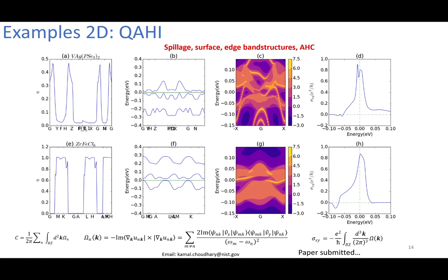We also found quantum anomalous Hall insulators. These are characterized by broken time reversal symmetry and which have gapped surface states, but the edge states are conducting, and which are also characterized by the zero-field or anomalous Hall conductivity which is again calculated from the Berry curvature.